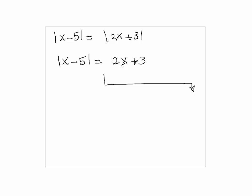So in this case we have two cases here. x minus 5 is equal to plus 2x plus 3, or x minus 5 is equal to minus 2x plus 3.